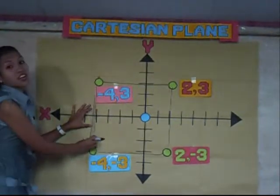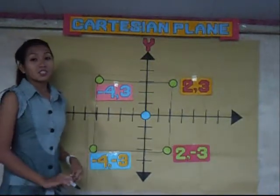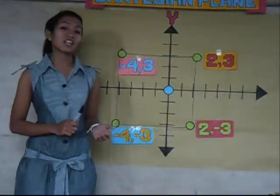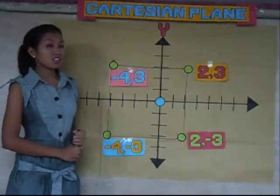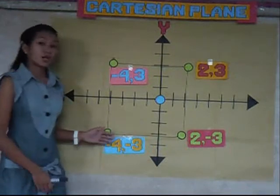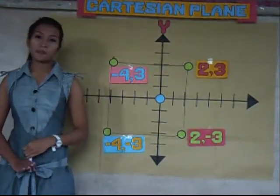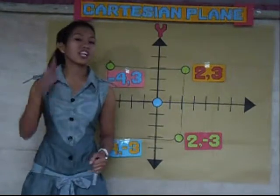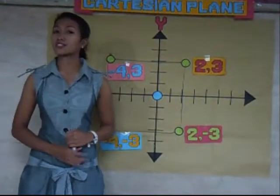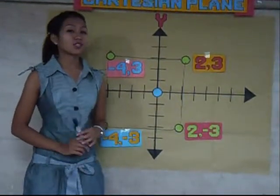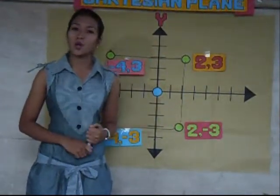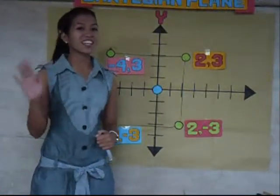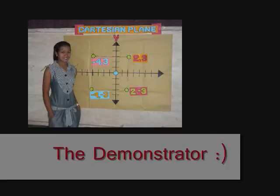There we have it! We formed a square. We all know that the sides of a square are all congruent and it has 90-degree angles. I hope you learned a lot. Again, this is Fransha at your service. Math may not teach us how to add love or subtract hate, but it gives us hope that in every problem, there is always a solution. Bye-bye!